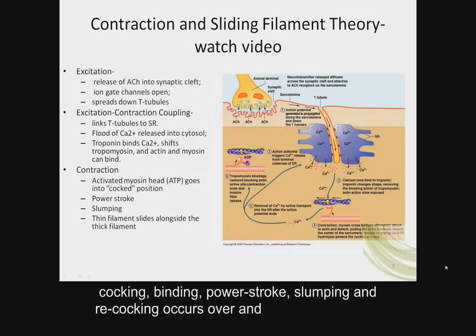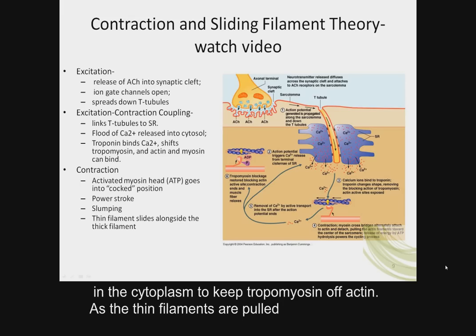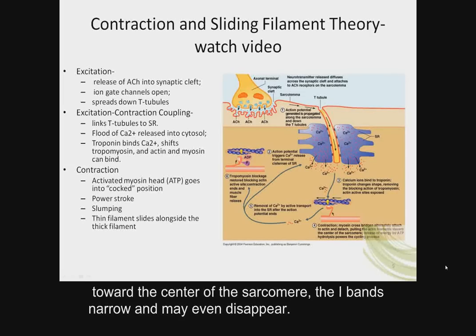This cycle of cocking, binding, power stroke, slumping, and re-cocking occurs over and over as long as the neuron continues to excite the muscle cell and calcium is in the cytoplasm to keep tropomyosin off actin. As the thin filaments are pulled toward the center of the sarcomere, the I bands narrow and may even disappear.